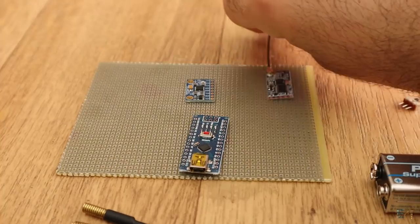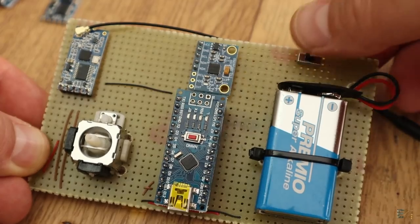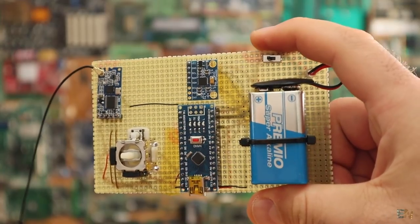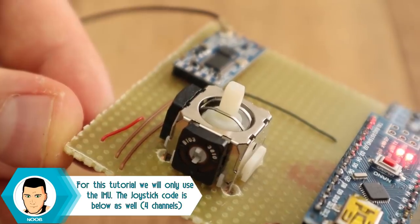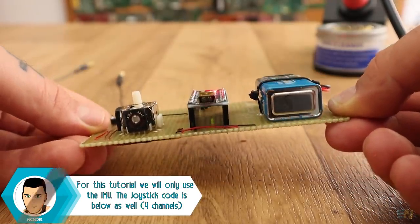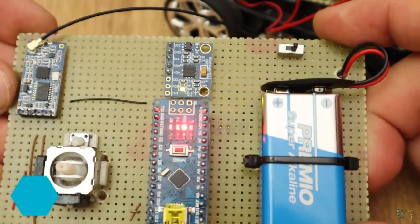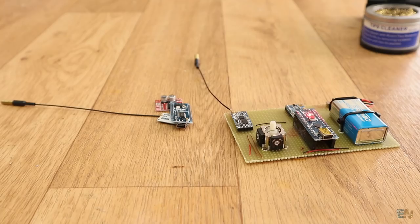OK, so I make all the connections on a piece of drilled PCB and I also add the on and off switch and the radio transmitter is ready. I've also placed a joystick as well, but we will use that at the end of this project. For now let's focus on the IMU data that could give us two channels for the radio controller. The controller board is ready so let's start with the receiver.